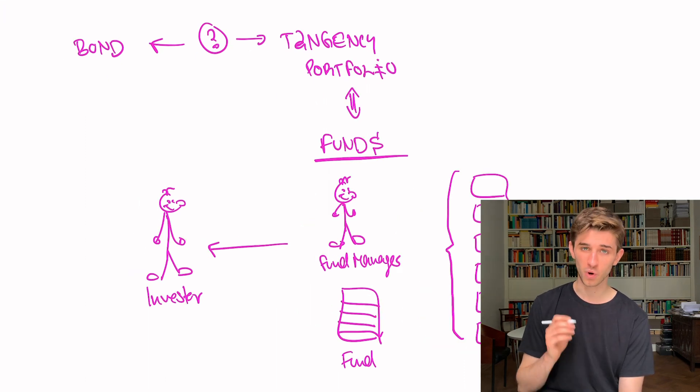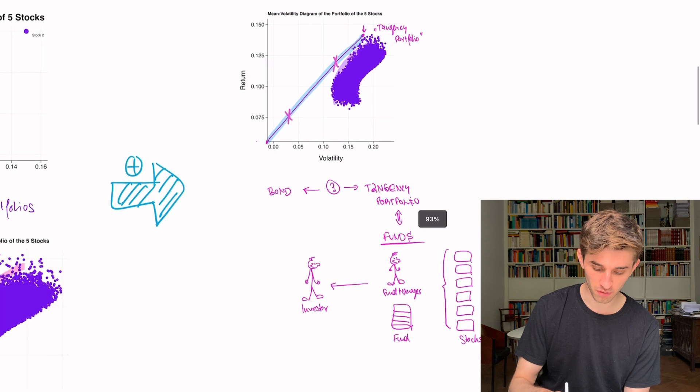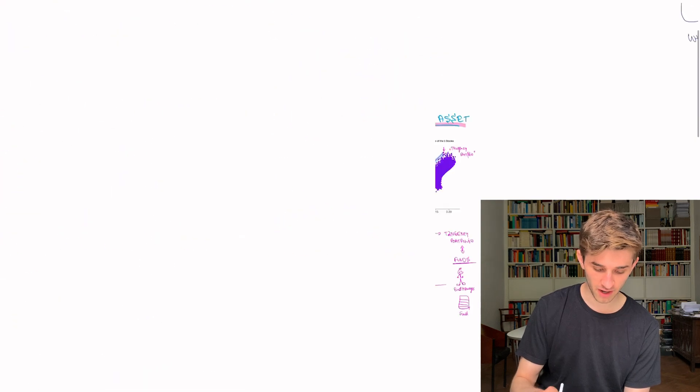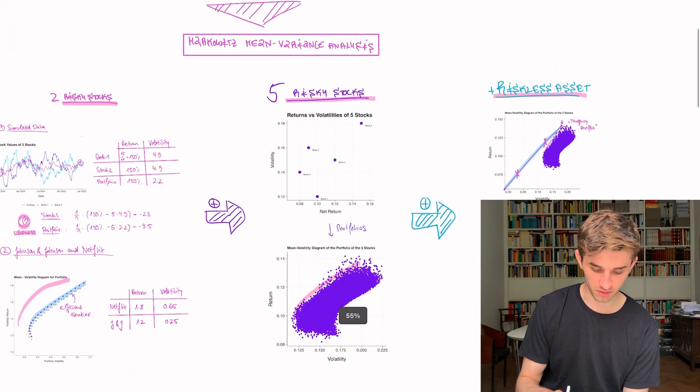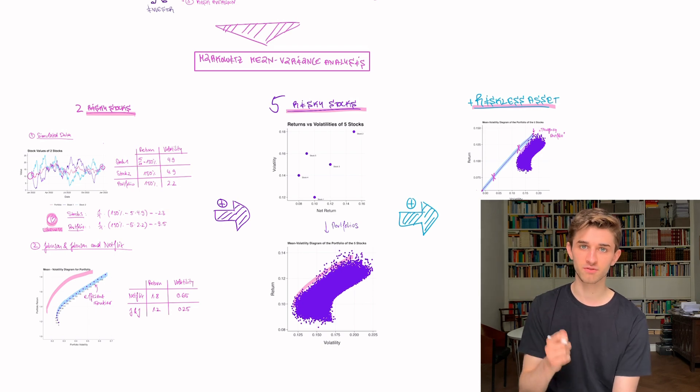So wrapping this up, what have we learned? We have learned that there's immense gains from forming portfolios of risky assets. And if we add a riskless asset, a kind of magic thing happens. There's only one combination of risky assets that we need to care about. It's the tangency portfolio.